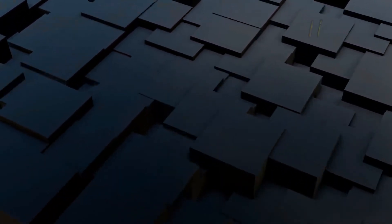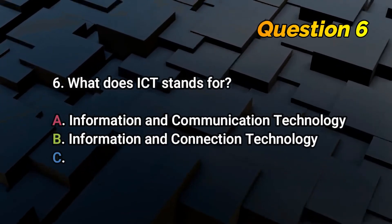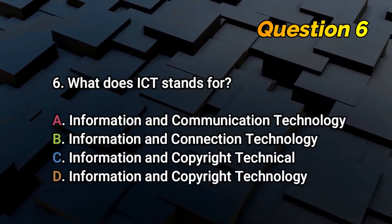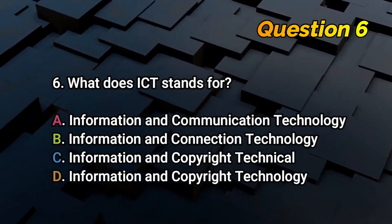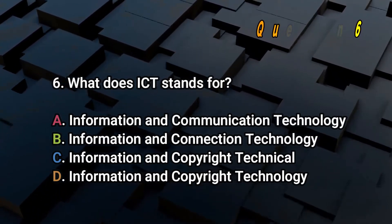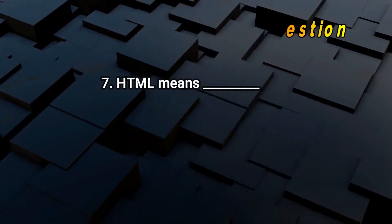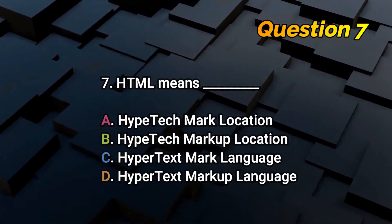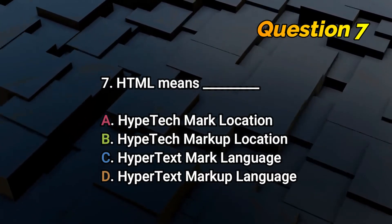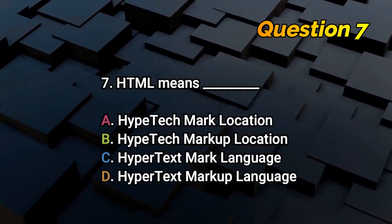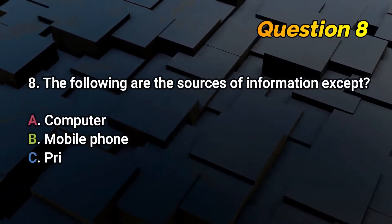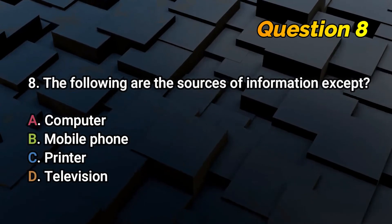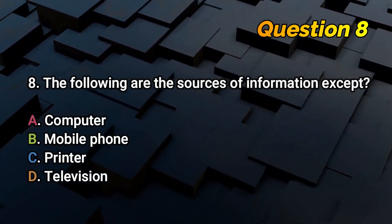Number 6: What does ICT stand for? Is it A. Information and Communication Technology, B. Information and Connection Technology, C. Information and Copyright Technical, or D. Information and Copyright Technology? Number 7: HTML means A. Hyptech mark location, B. Hyptech markup location, C. Hypertext mark language, or D. Hypertext markup language? Number 8: The following are the sources of information except A. Computer, B. Mobile phone, C. Printer, or D. Television?